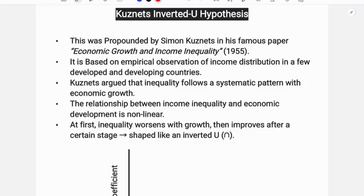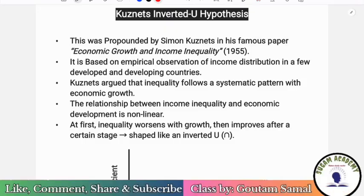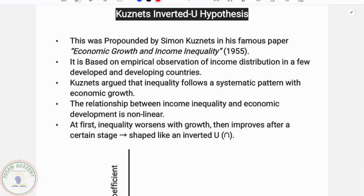Hello students, welcome to Sugam Academy. In this class we are going to discuss the Kuznets inverted U hypothesis from development economics paper one. This was propounded by Simon Kuznets in his famous paper 'Economic Growth and Income Inequality.' It is based on empirical observation of income distribution in a few developed and developing countries.